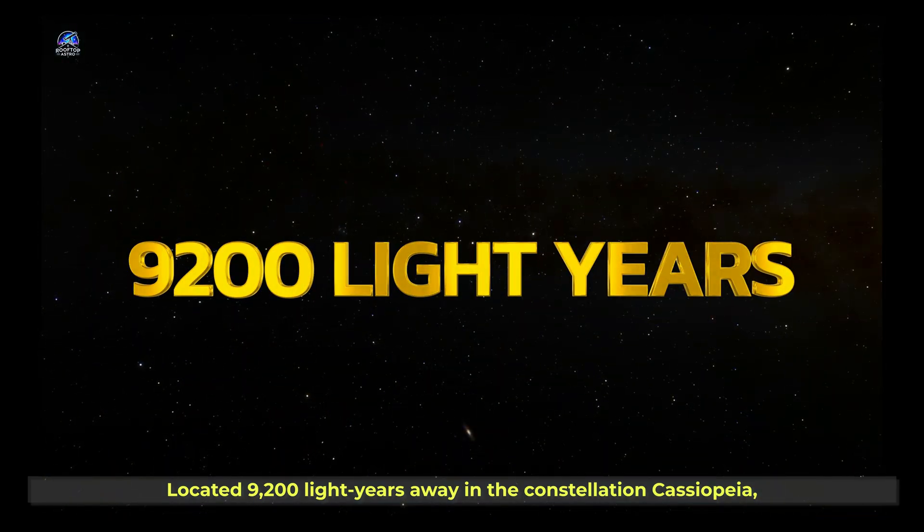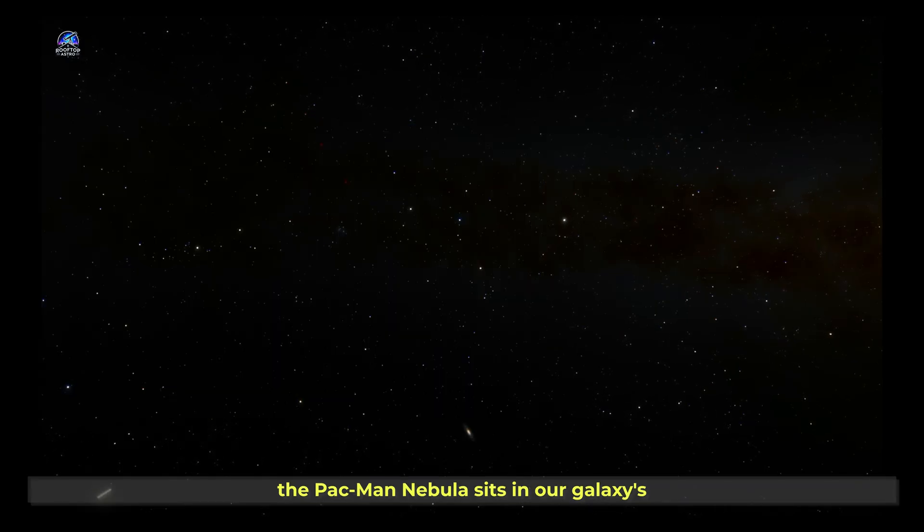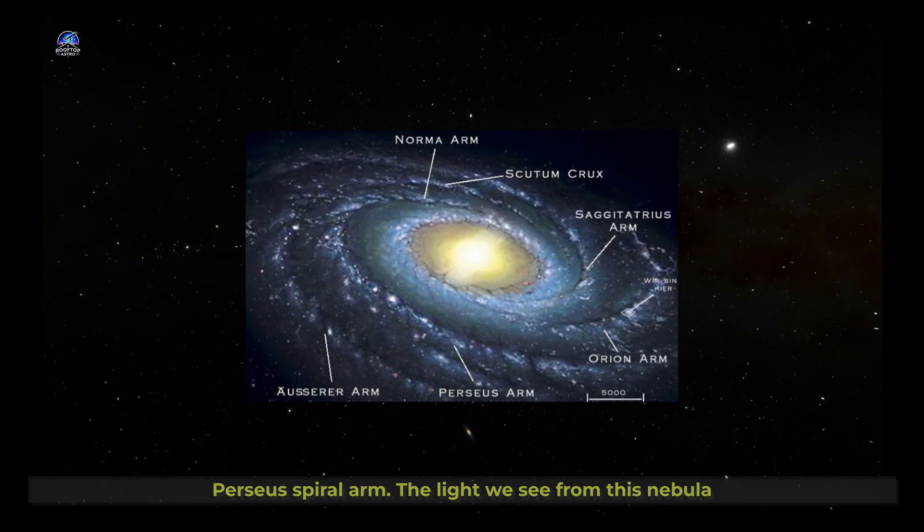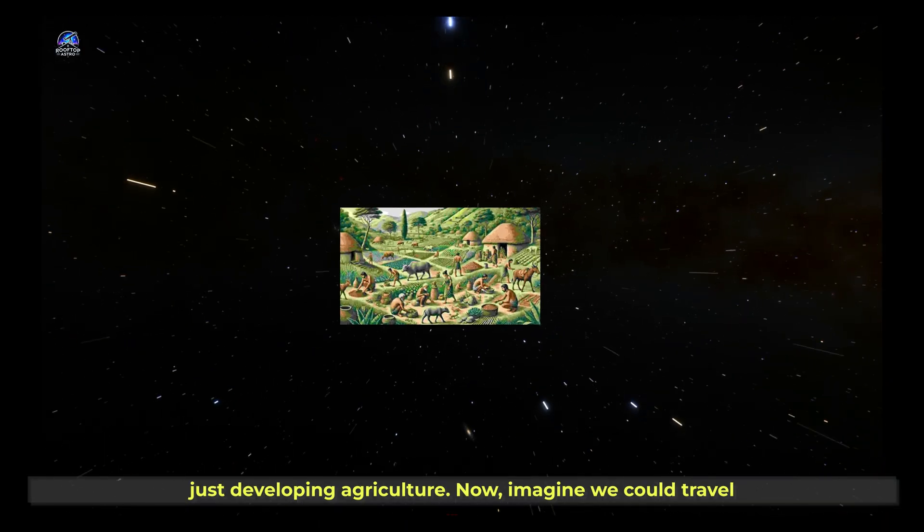Located 9,200 light years away in the constellation Cassiopeia, the Pac-Man Nebula sits in our galaxy's Perseus spiral arm. The light we see from this nebula today began its journey when humans were just developing agriculture.